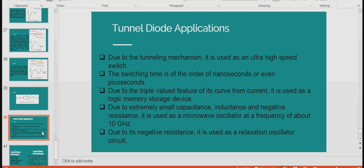So what are the applications of tunnel diode? Due to the tunneling mechanism, it is used as an ultra-high speed switch. The switching time is of the order of nanoseconds or picoseconds. Due to the triple-valued feature of its curve, that is from zero to peak value, peak value to valley point negative resistance, and above valley point it behaves like an ordinary P-N junction diode, it is used as a logic memory storage device. That is minus one volt, zero volt, plus one volt representing negative logic, zero logic, and positive logic. Due to extremely small capacitance, inductance and negative resistance, it is used as a microwave oscillator at a frequency of about 10 gigahertz. Due to its negative resistance, it is used as a relaxation oscillation circuit.